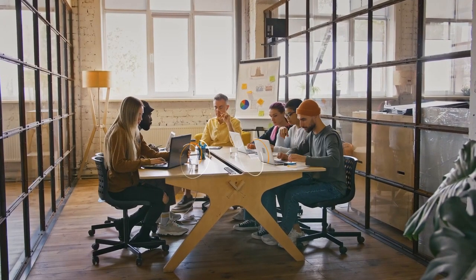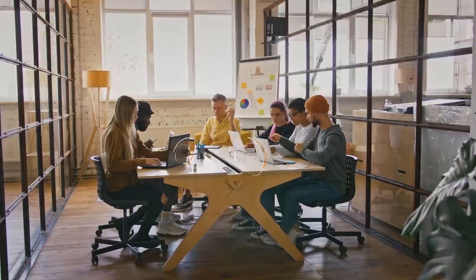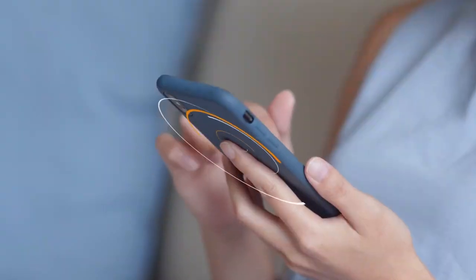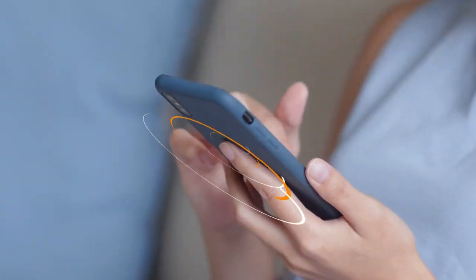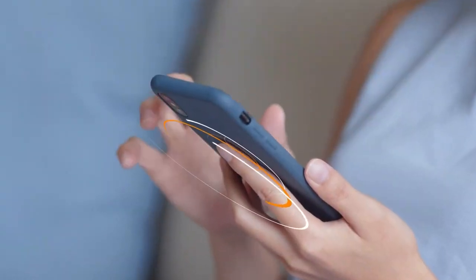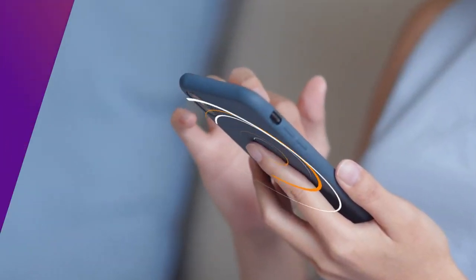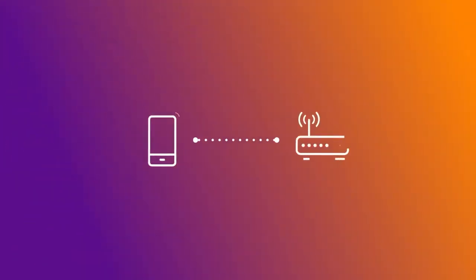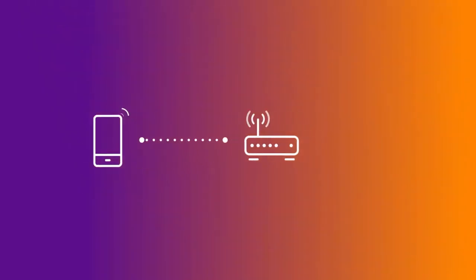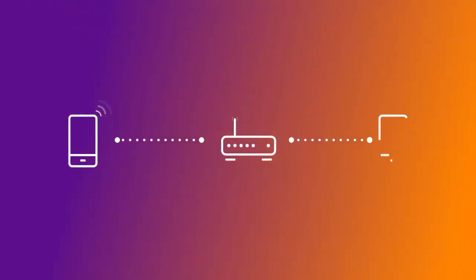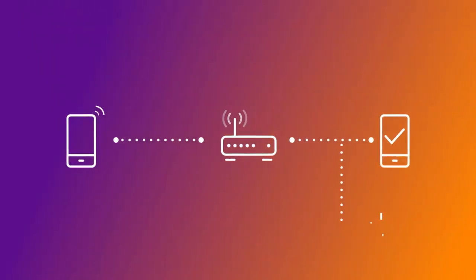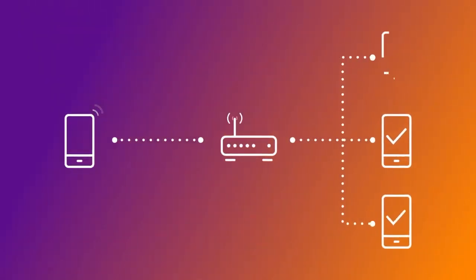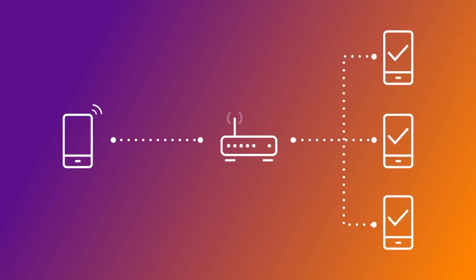Your access points will do a quick reset and any unallowed devices will lose their connectivity. When you want to add additional devices the process is very similar — let's look at how you do this.